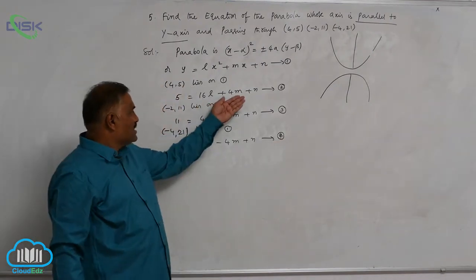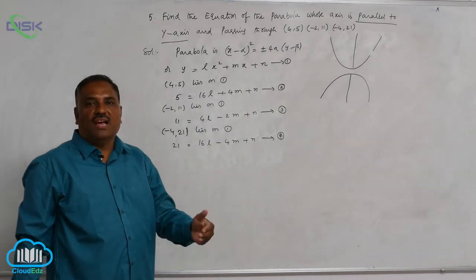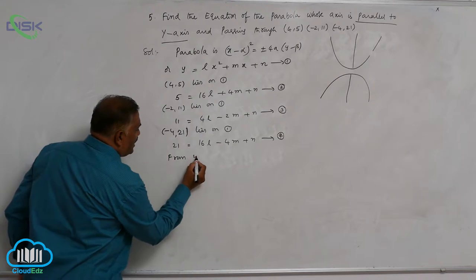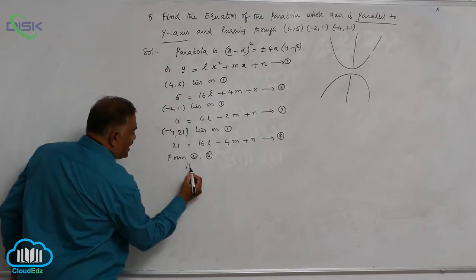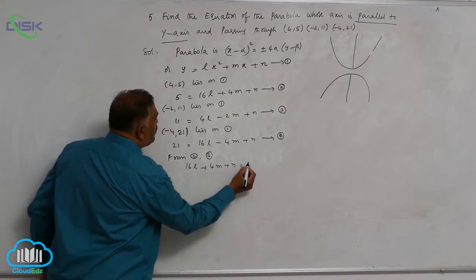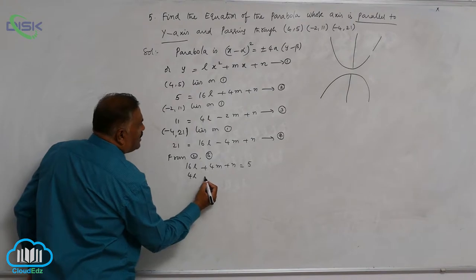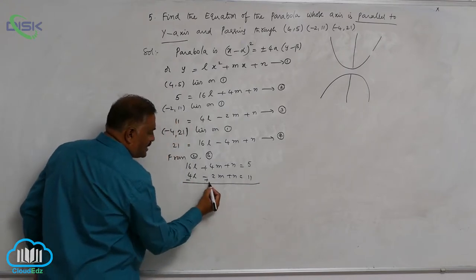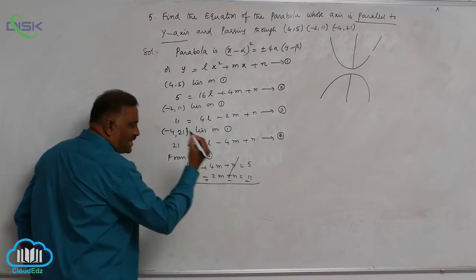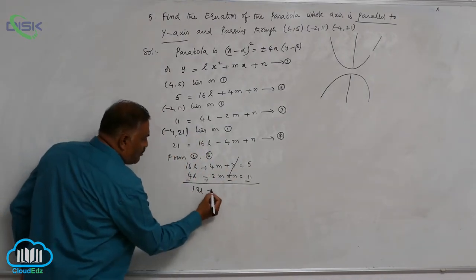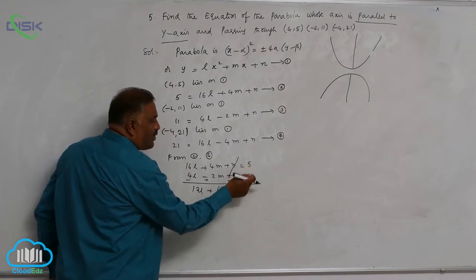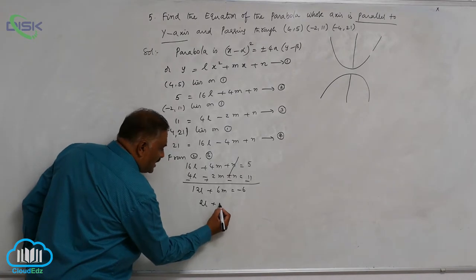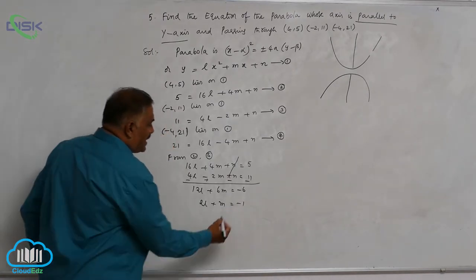Now we need to solve these three equations to get the unknowns l, m, and n. Consider equations 2 and 3: 16l plus 4m plus n equals 5, and 4l minus 2m plus n equals 11. Taking subtraction, n gets cancelled, giving 12l plus 6m equals minus 6. Dividing by 6: 2l plus m equals minus 1. Make this equation 5.